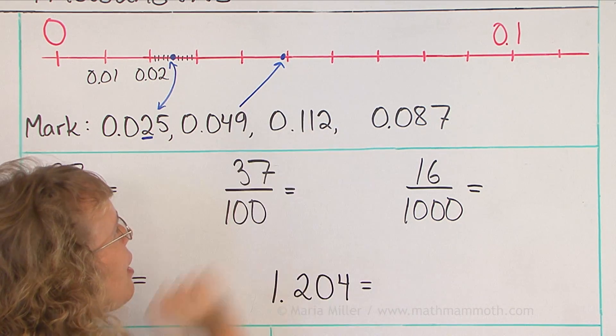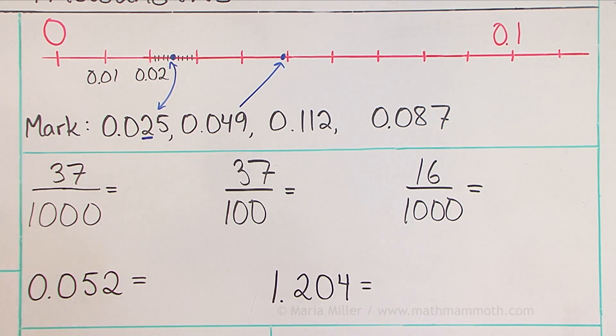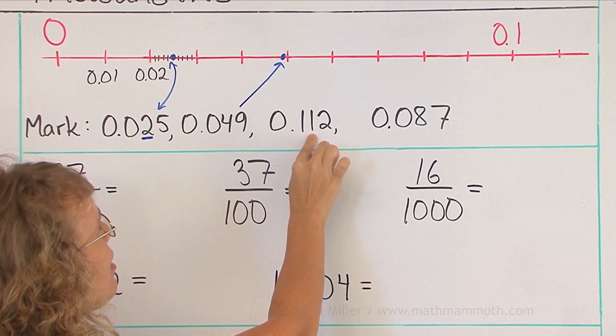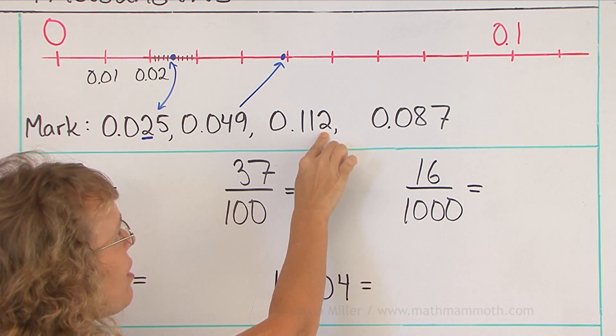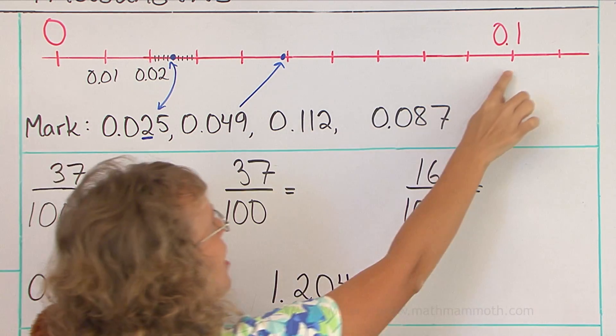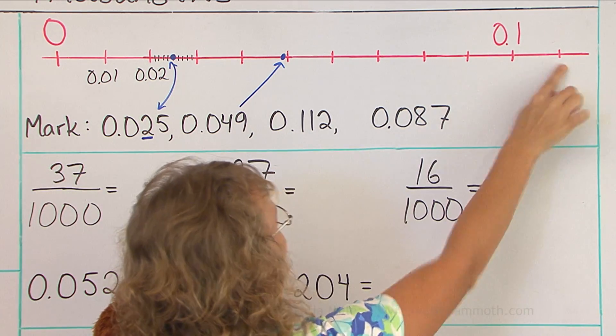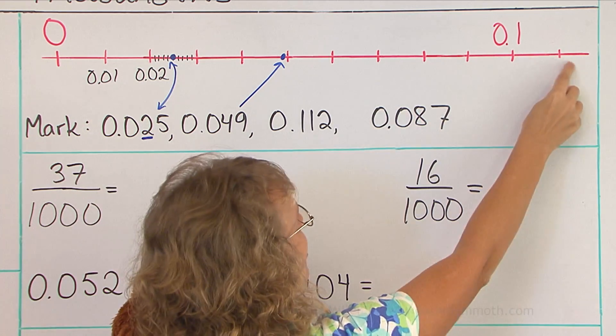One hundred twelve thousandths, how about that one? This one has one-tenth and then one-hundredth and then two-thousandths. One-tenth is over here. Then after that we go one-hundredth more over here and then beyond that two-thousandths further.